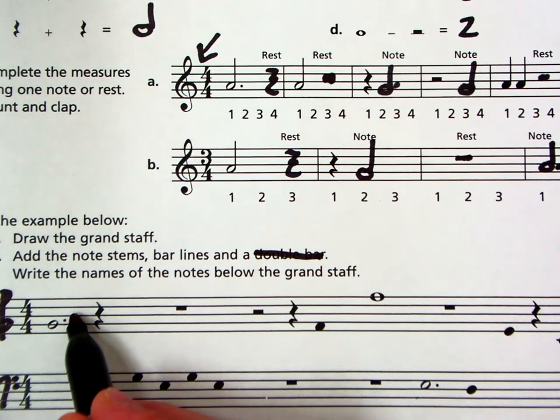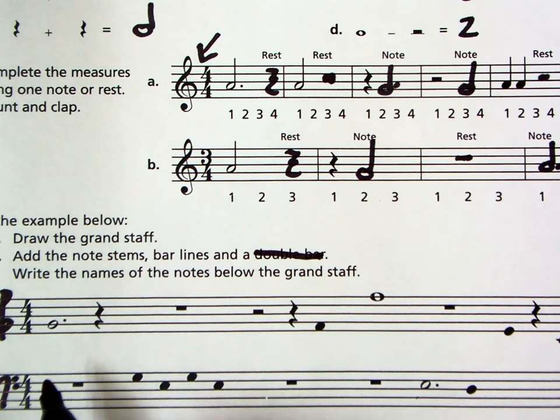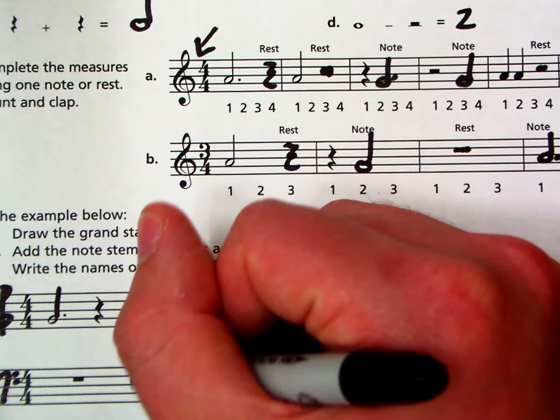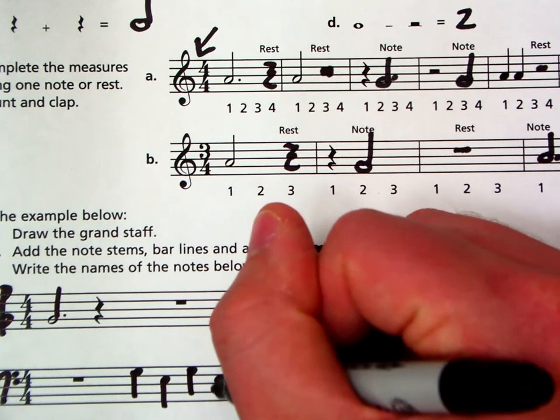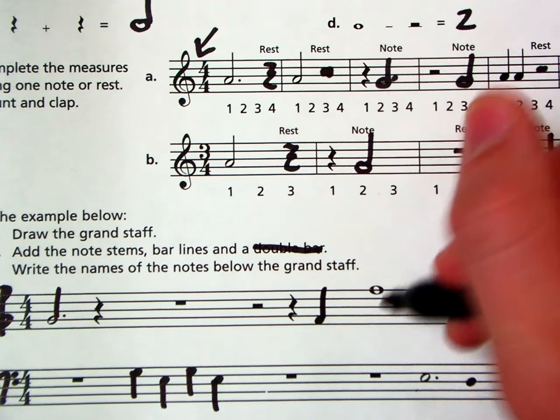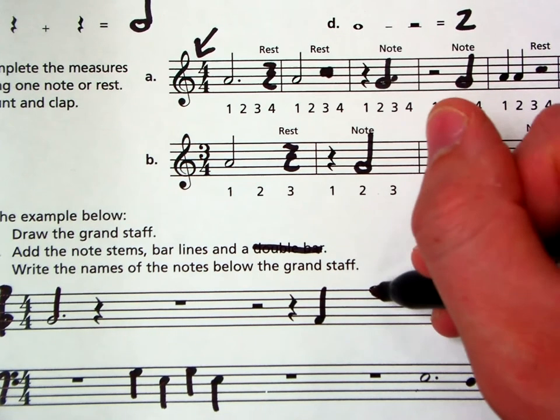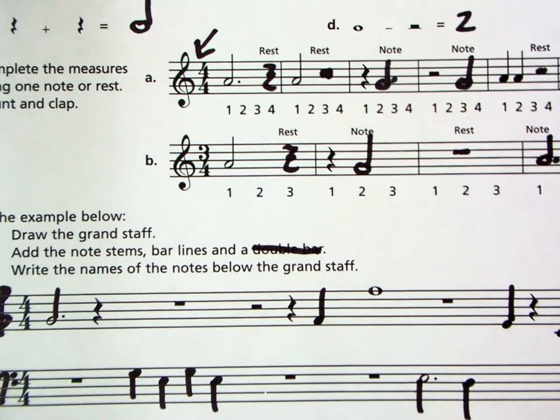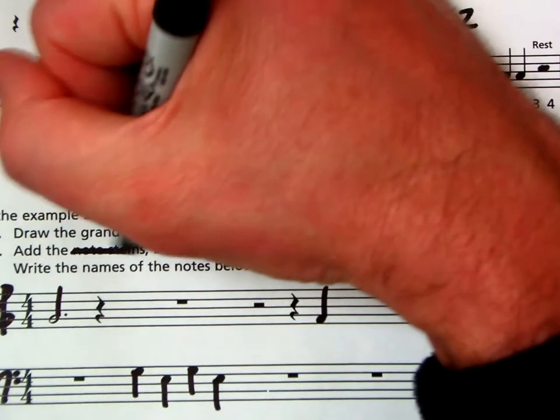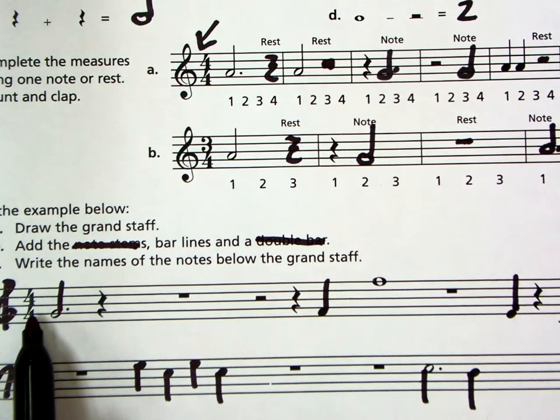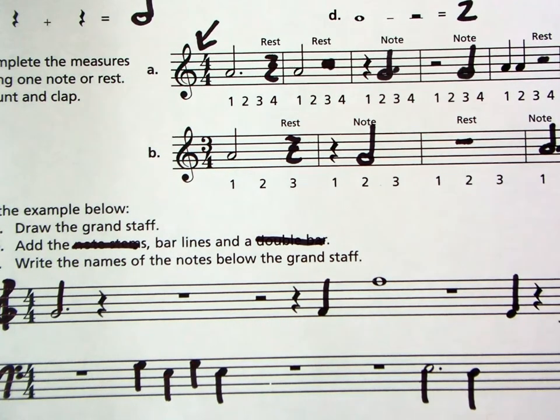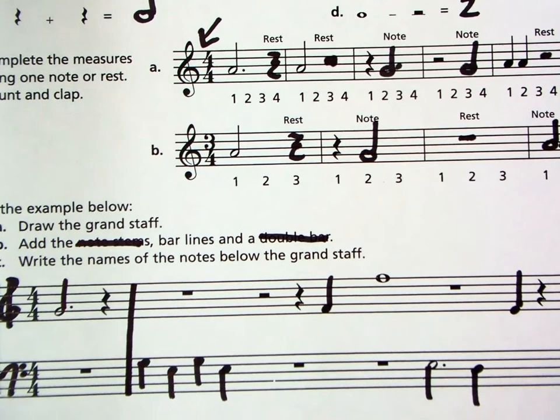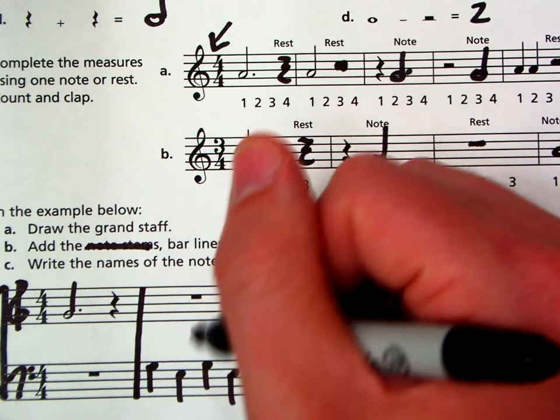Now we need the stems and bar lines. Let's do stems first. Remember, if it is below the middle line on either staff, the stem goes up and to the right. So we have up and to the right. Down here. So down, down, down, down. Then up on the right. This is the whole note. Okay. Down on the left. Down on the left. Up on the right. Up on the right. Up on the right. So we added note stems. Now we need to add bar lines. So four-four time. That means every four beat we get a bar line. So one, two, three, four. And they go through both the treble and the bass clef.